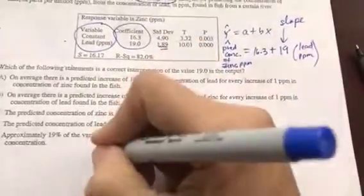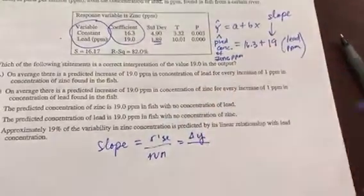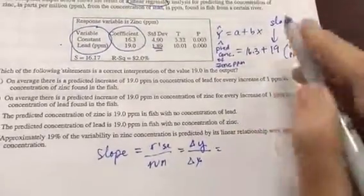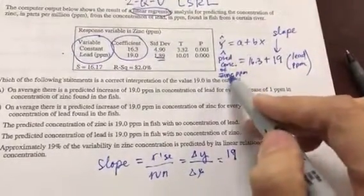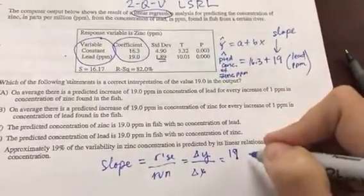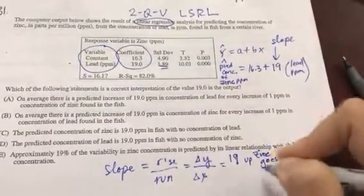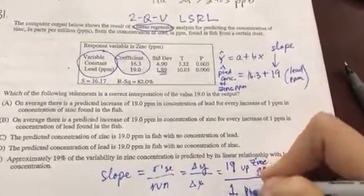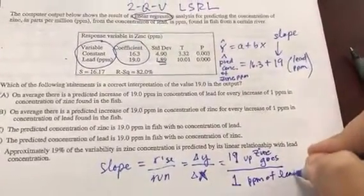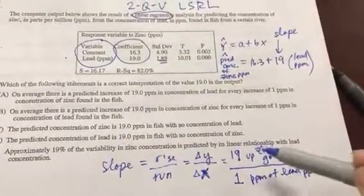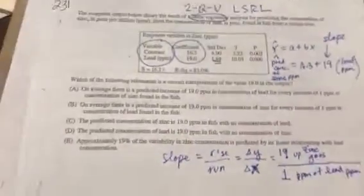And so just a quick review on slope. Slope is our old friend rise over run. And that is just how much did the Y value change over how much did the X value change. In slope, ultimately, that number 19 means 19, and Y here is our concentration of zinc. So the zinc concentration goes up by 19 for every one part per million of, and that's our X, lead part per million. So if the lead goes up 1, zinc goes up 19. If lead goes up 2, zinc goes up 38. You get the point.